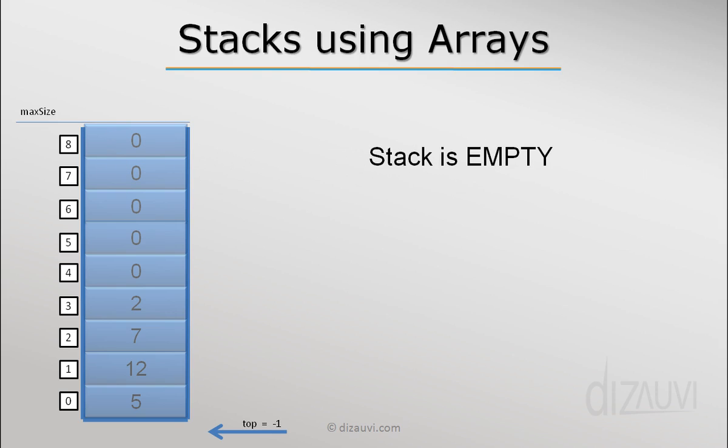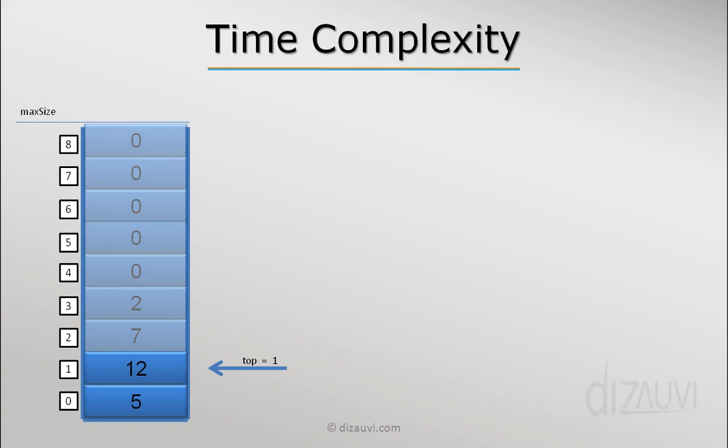Let's see the time complexity of these three operations we just saw. All three operations that we can perform on a stack—push, pop, and peek—are all constant time operations. That is, all of these operations take O(1) time. Why? Because the time taken by these operations doesn't really depend on the number of items in the stack.